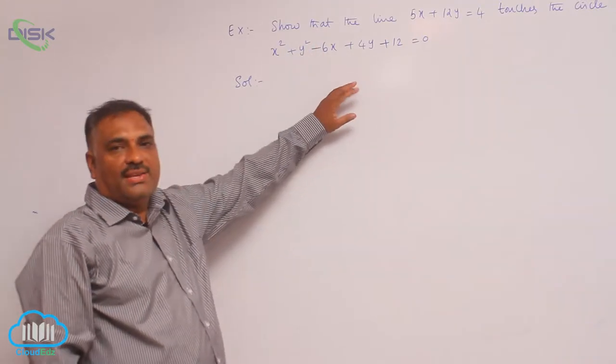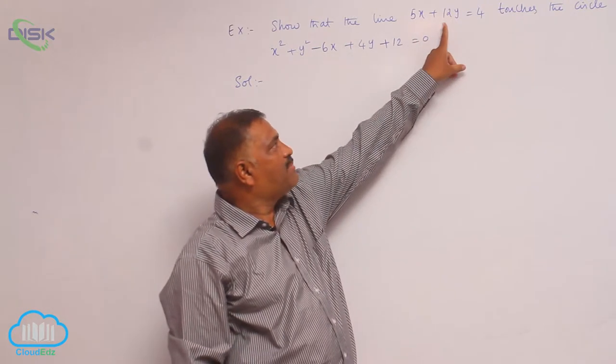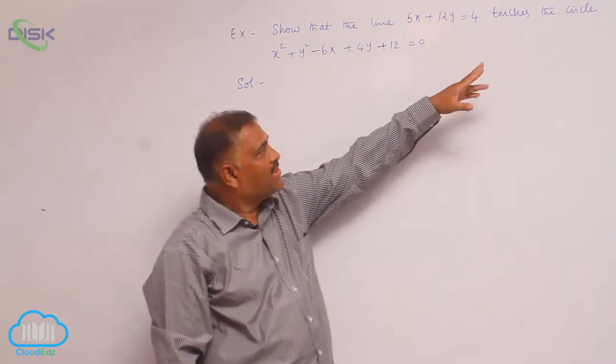Based on this concept of tangency, we will discuss a problem. Show that the line 5x plus 12y equal to 4 touches the circle.